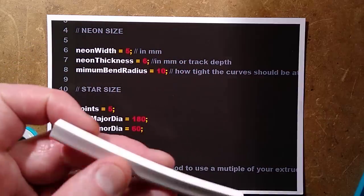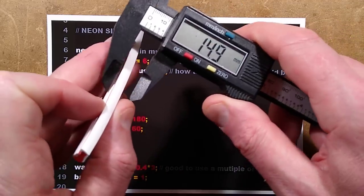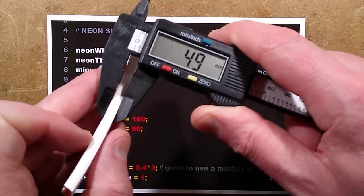If you download the NeoStar script you will have variables like NEON width. NEON width in millimeters is the thickness of this. If you use a set of calipers or some other device you'll be able to actually just close it on this and it gives you the dimension.